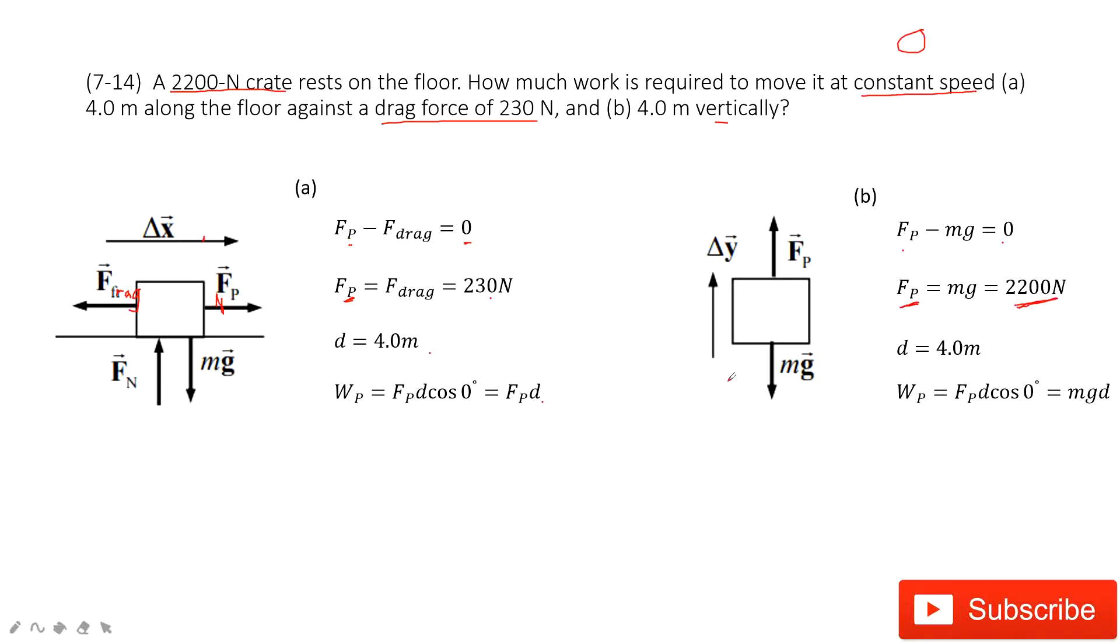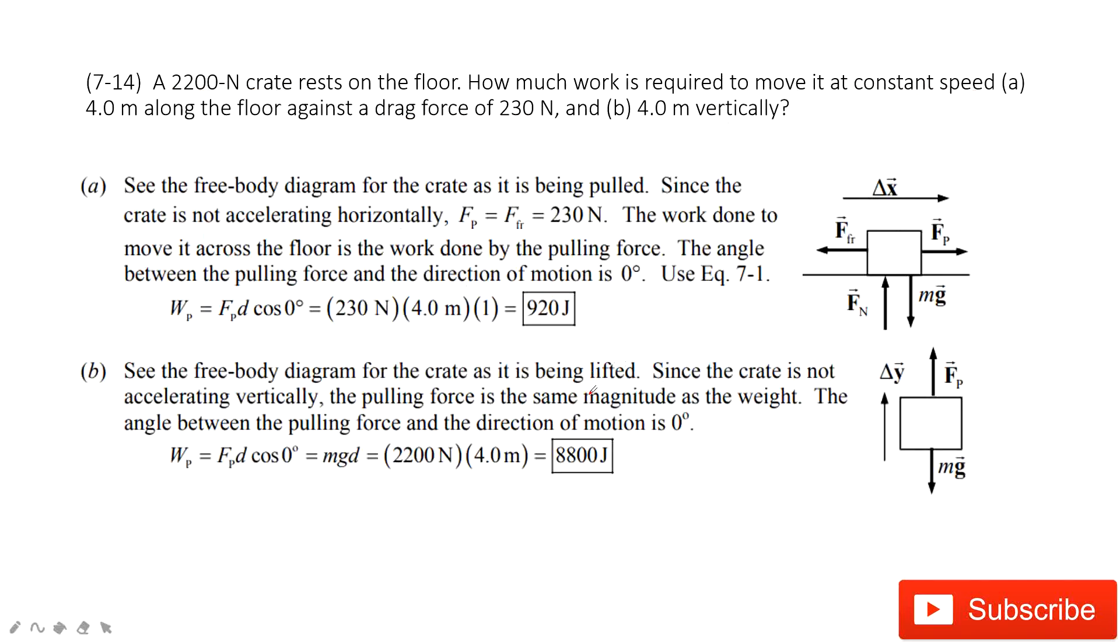Then also the displacement is also up. This is 4m. And the angle theta between the displacement and force is zero. So we still get Fp times D cosine zero. And Fp is mg. So in this one, you input the numbers inside, you can get the final answer. Thank you.